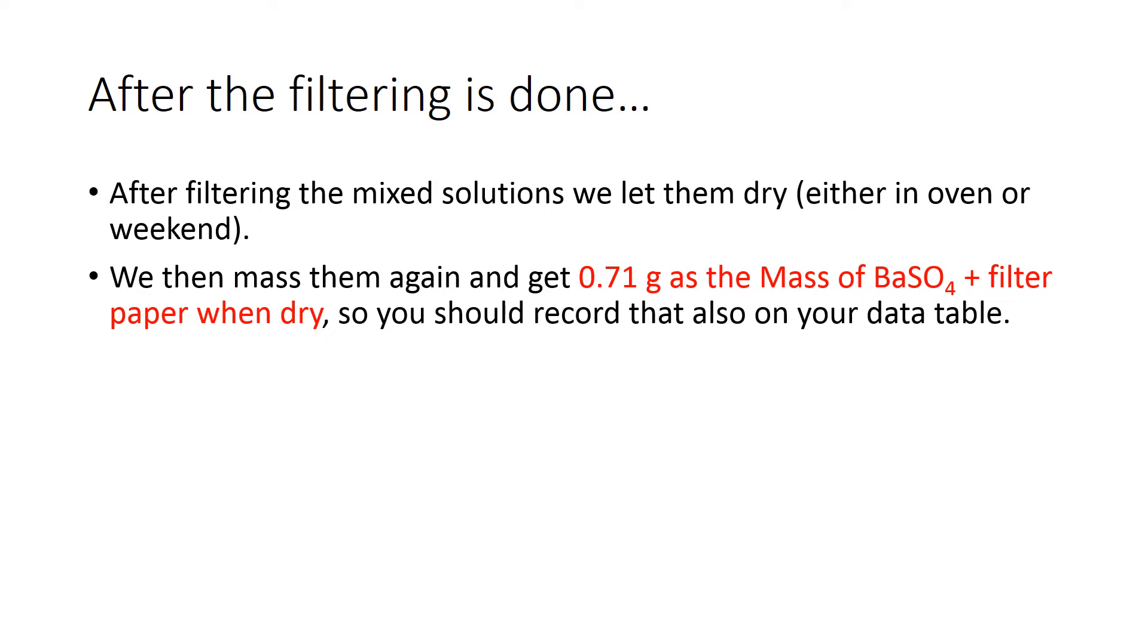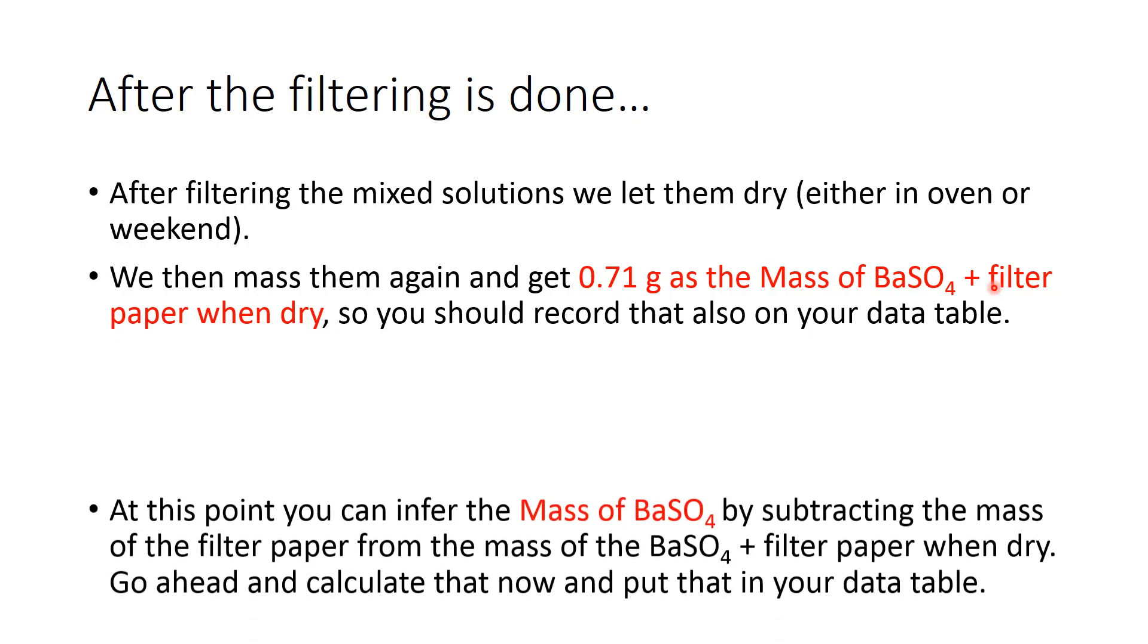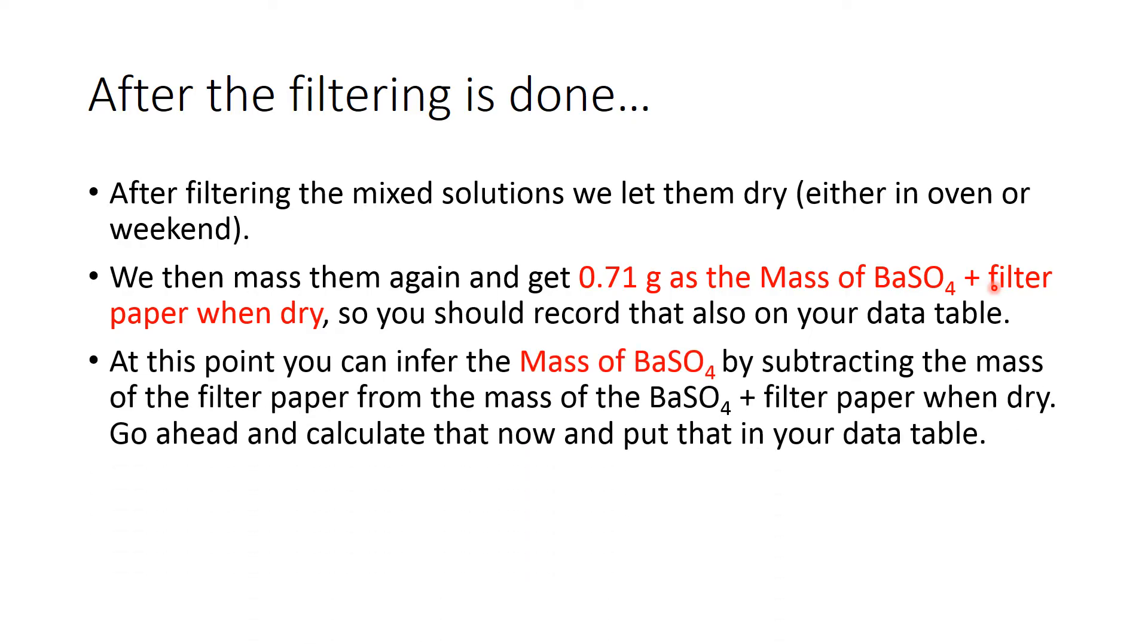So the filtering happens, we do all that, the drying happens overnight in an oven or over the weekend, and we're ready to go. We take that dry filter and we find that the mass of the barium sulfate plus the filter, go to your data table, write that down: 0.71 grams is what we got as our mass. Record that. Now remember, at this point you can infer the mass of the barium sulfate. The next thing on the data table is mass of barium sulfate, so check that out and you're going to want to subtract the filter paper mass from the mass of the barium sulfate plus the filter paper when it was dry. Go ahead and calculate that now.